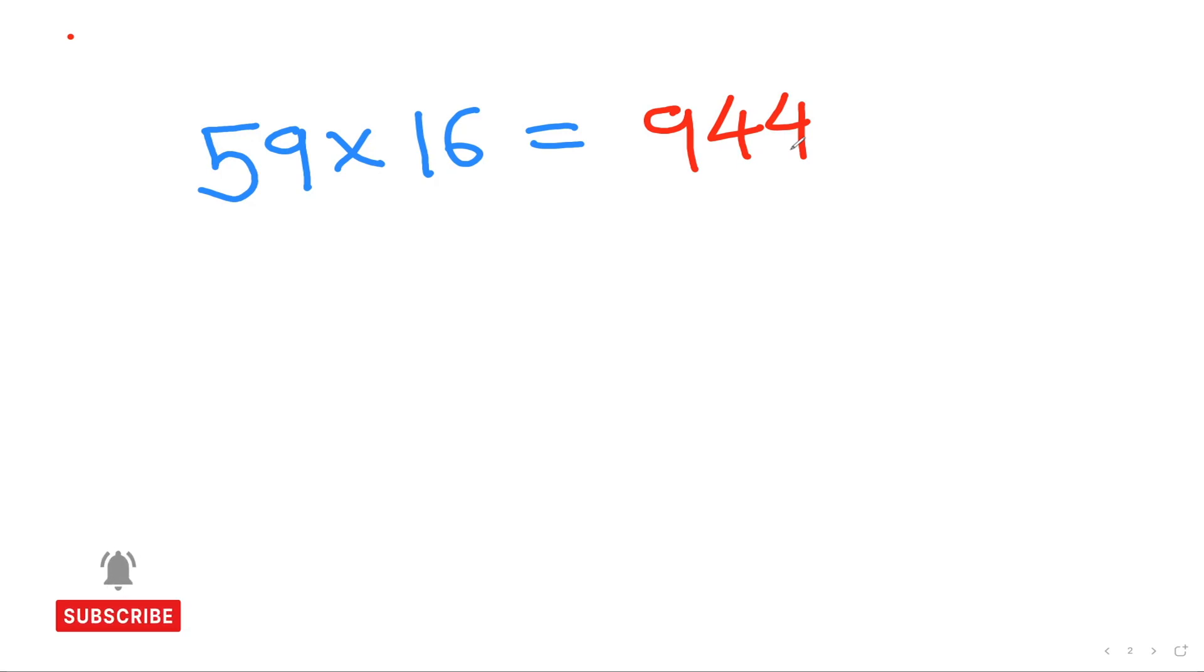I'm going to show you the steps how you can do that. So we are going to do this in a subtraction method. 59 I can also write down as 60 minus 1 and then I can multiply them both with 16 and 16.